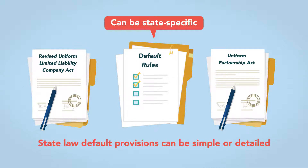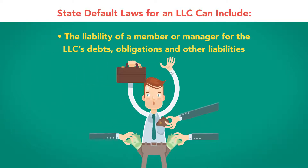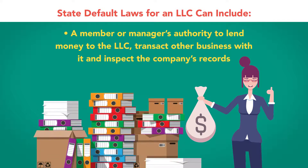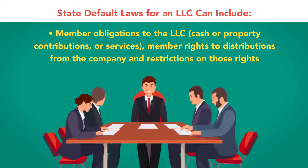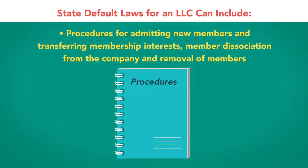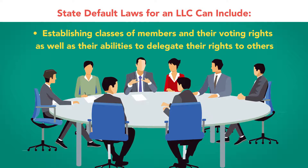State law default provisions can be simple or detailed. For an LLC, state law default rules can include: the liability of a member or manager for the LLC's debts, obligations, and other liabilities; a member or manager's authority to lend money to the LLC, transact other business with it, and inspect the company's records; the company's ability or responsibility to indemnify a member or manager for acts taken on behalf of the LLC; member obligations including cash, property contributions, or services; member rights to distributions and restrictions on those rights; procedures for administering new members, transferring membership interests, member disassociation, and removal of members; and establishing classes of members and their voting rights.